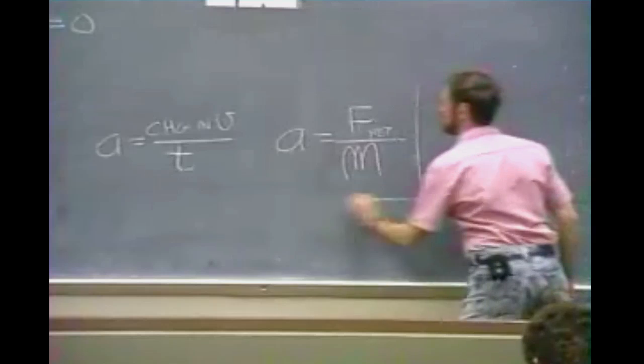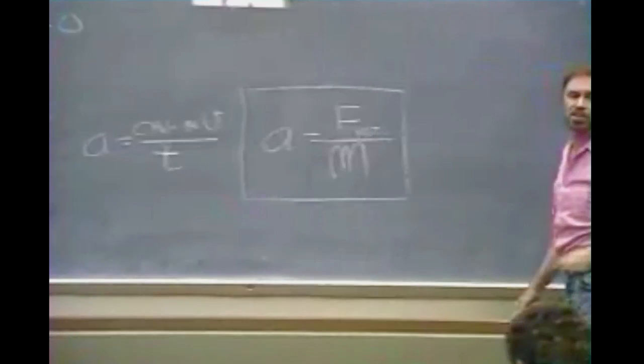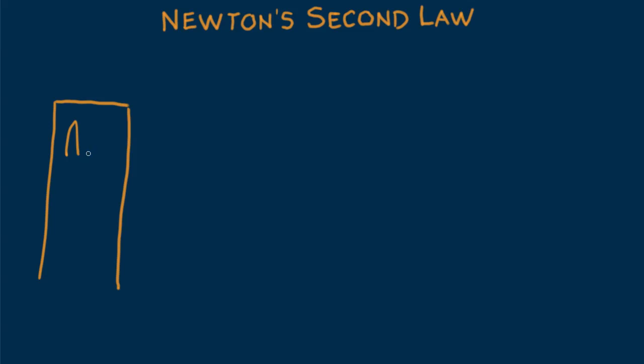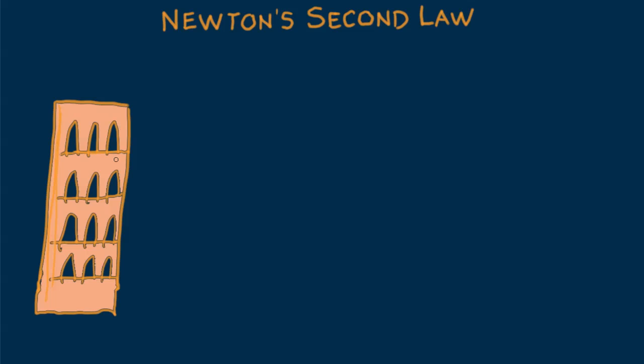But how much acceleration depends upon the amount of matter. This idea is Newton's second law of motion. Let's pick up this idea in this screencast. We'll apply Newton's second law and resolve the mystery of Galileo's Leaning Tower of Pisa experiment.